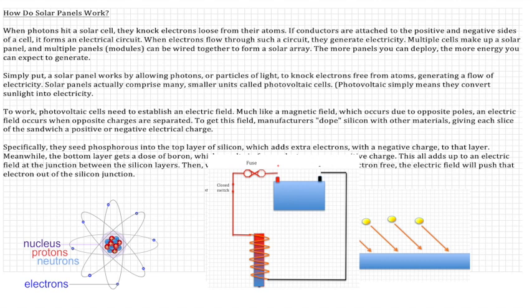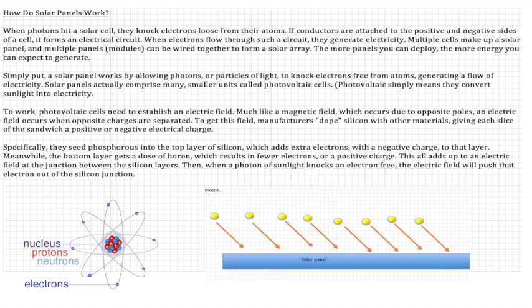If conductors are attached to the positive and negative sides of a cell, it forms an electrical circuit like the ones we've talked about before. When electrons flow through such a circuit, they generate electricity.